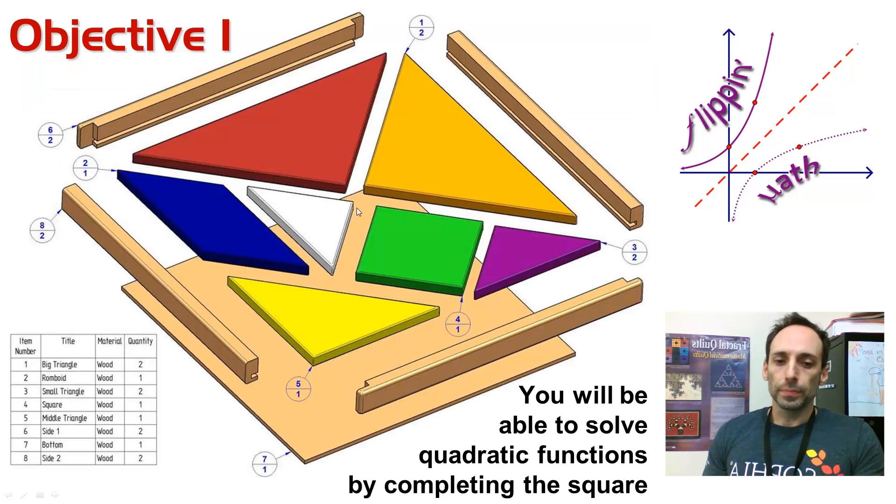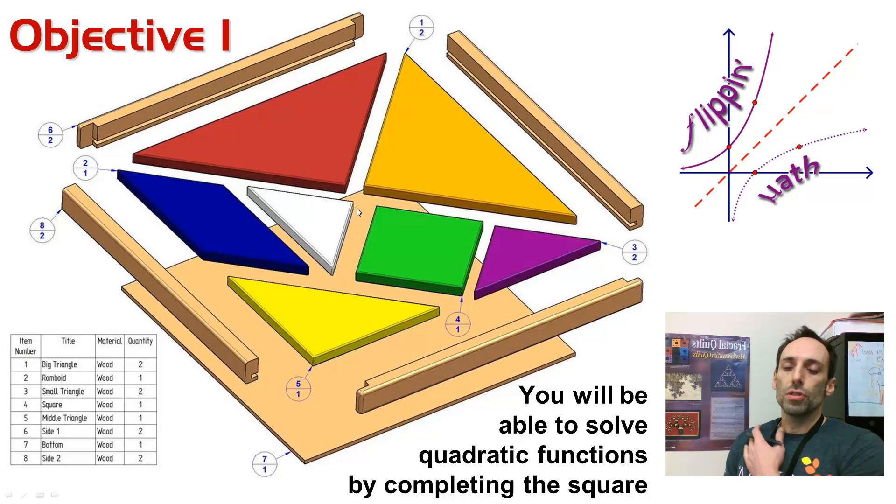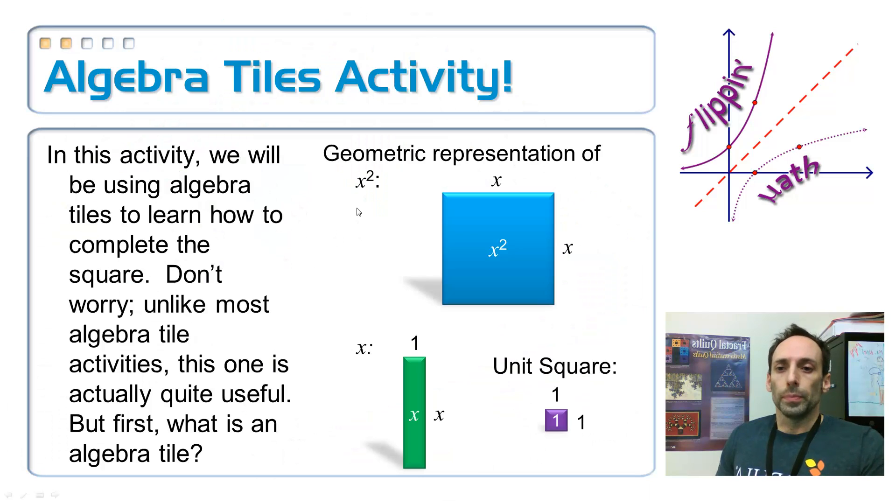Objective 1, you're going to be able to solve some quadratic equations by completing the square. The picture here is a picture of tangrams, and the tangrams are coming together to complete a square. There you go. So, we're going to start off with a little activity. This activity involves algebra tiles. Now, ordinarily, I think algebra tiles are a waste of time. But, in this case, it gives you a very good visualization of what's going on when you complete the square.